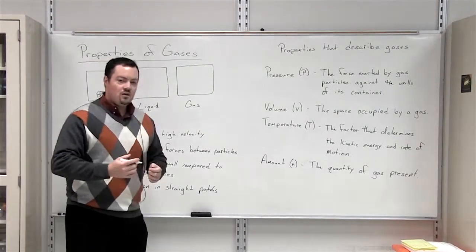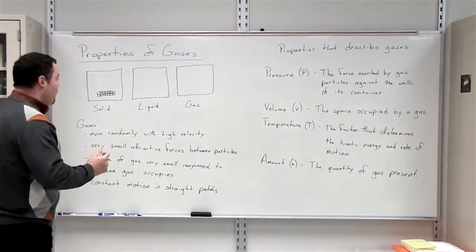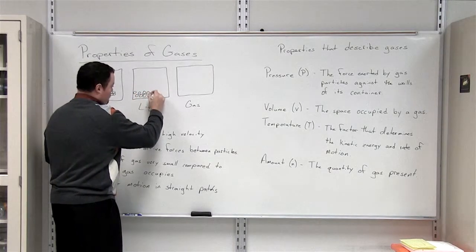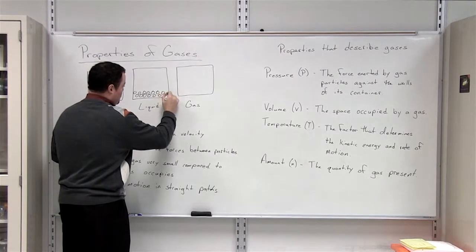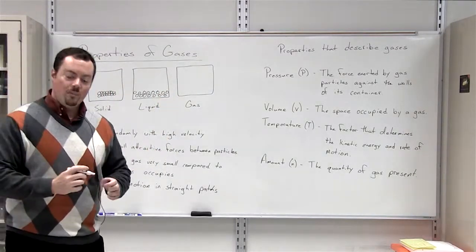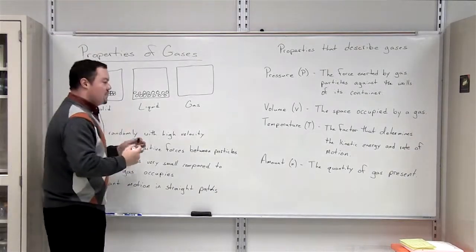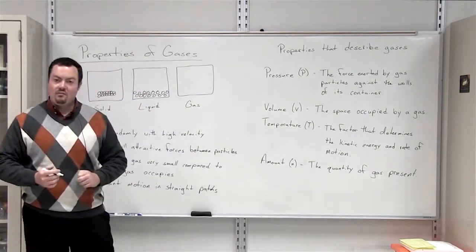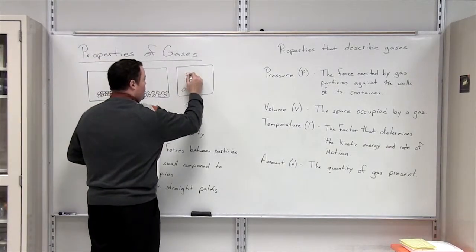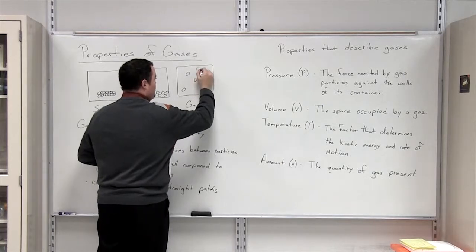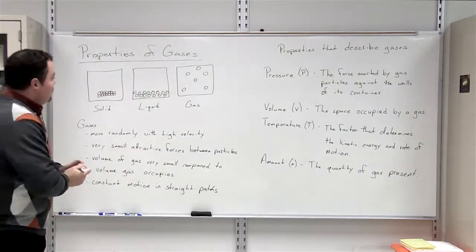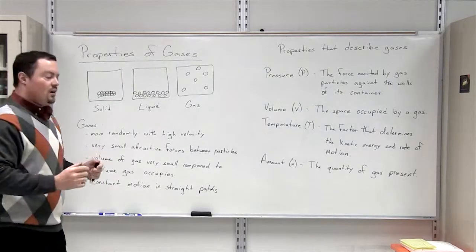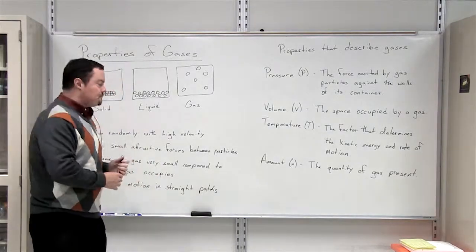In a liquid, the particles have more space between them, however they are still somewhat close together. The space between the particles is what allows a liquid to have a fluid motion. A gas looks much different than that of a liquid or solid, where the particles are much more spread out. So one of the main properties of a gas is the fact that the particles that make up that gas have lots of distance between them.